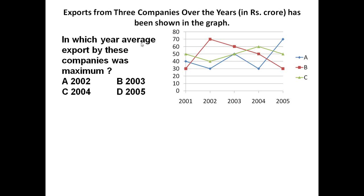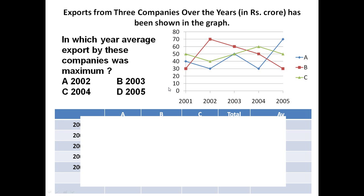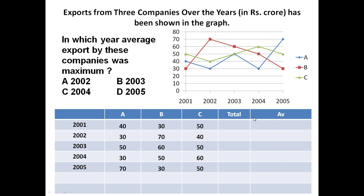Now using this graph you have to answer certain questions. The first question is: in which year was the average export by these companies maximum? Every year they are exporting — in which year was this average export maximum? To answer this question, let us prepare a small table. Total 5 years data is there: 2001, 2002, 2003, 2004, and 2005.